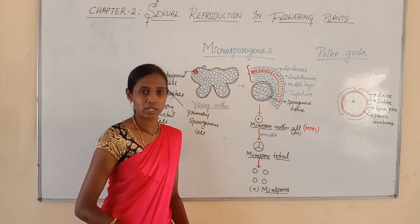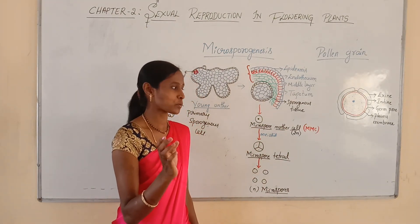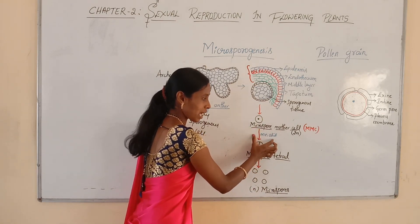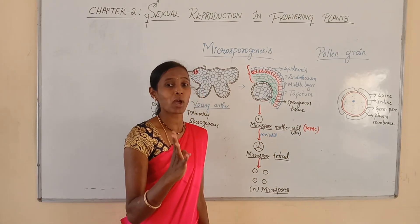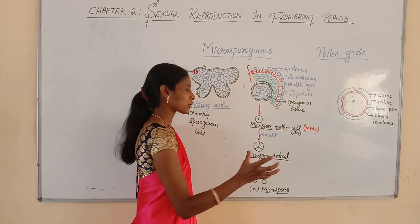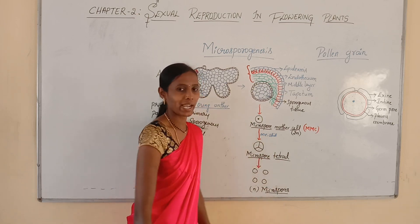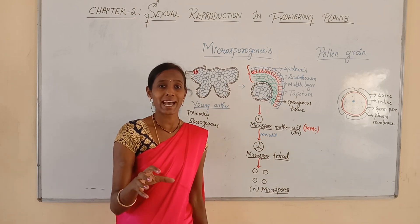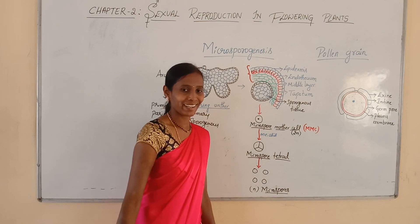Meiotic cell division is a reductional cell division, resulting in the formation of four haploid microspores. When the microspore mother cell undergoes meiotic division, it results in the formation of four haploid microspores. These four haploid microspores are arranged like a cluster, which is why it is called a microspore tetrad.